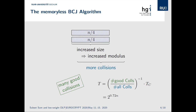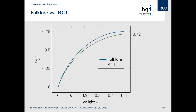It is quite easy to generalize these algorithms to arbitrary weight. On the next slide we see a plot of the time complexity exponent of both algorithms as a function of omega. On the y-axis is the time complexity exponent and on the x-axis is the weight omega. At omega = 0.5, the known complexity exponents are 0.72 for BCJ and 0.75 for the folklore algorithm. Regardless of which weight you choose, the BCJ algorithm outperforms the folklore approach.